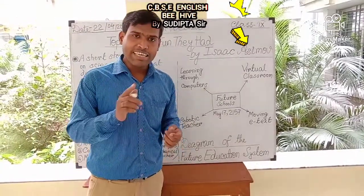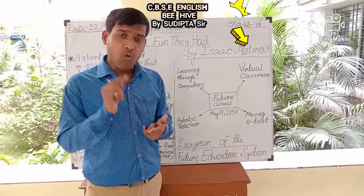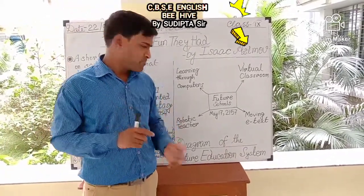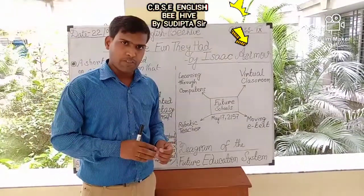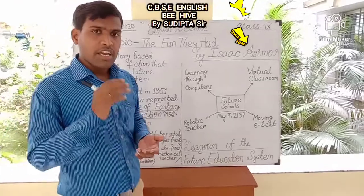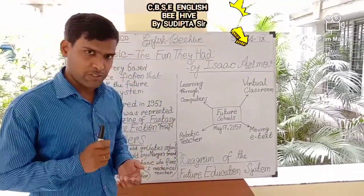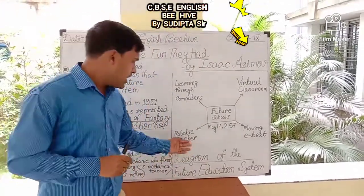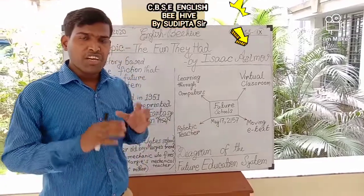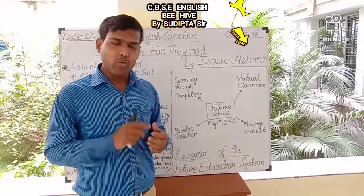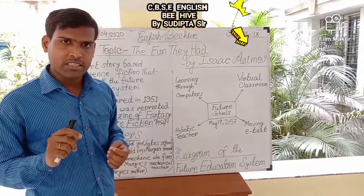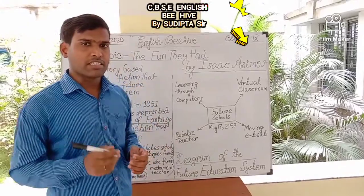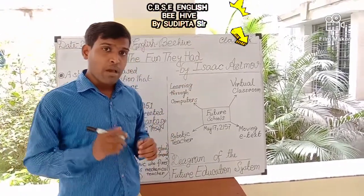E-text is basically a form of digital text that moves on the screen. The next concept is the robotic teacher. Instead of human teachers, in the future there will be robotic teachers. These robotic teachers will have numerous subjects pre-loaded, and students will press single buttons or punch cards to learn various things from them.